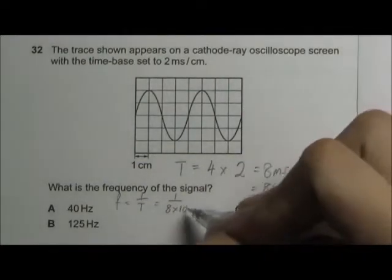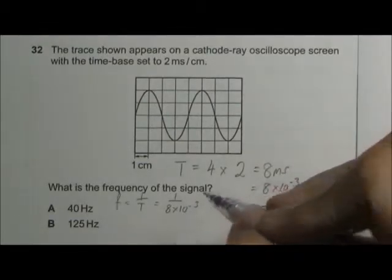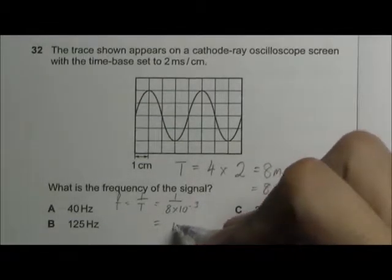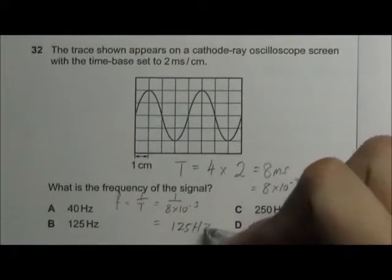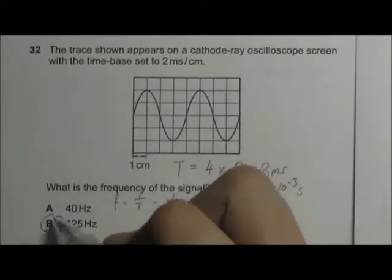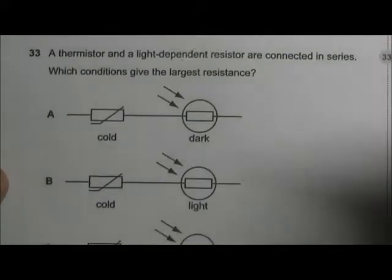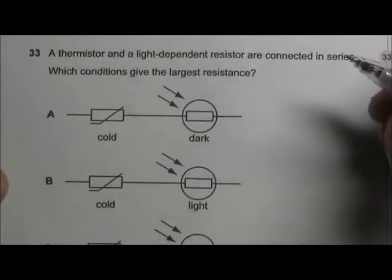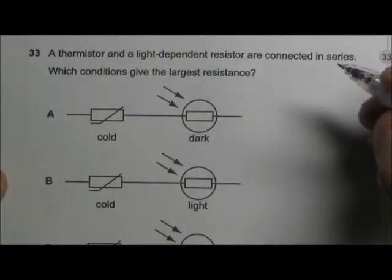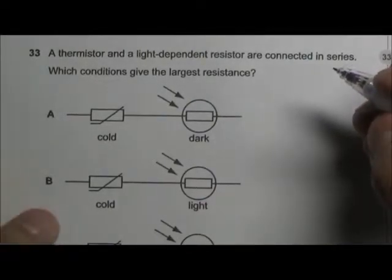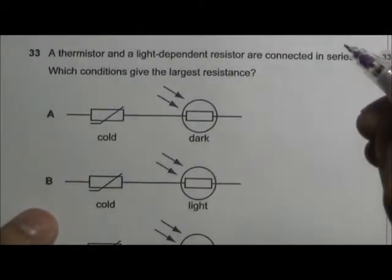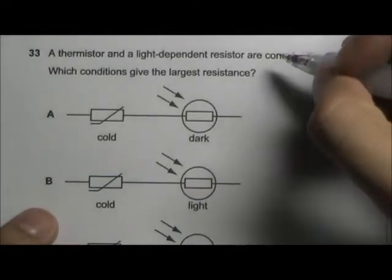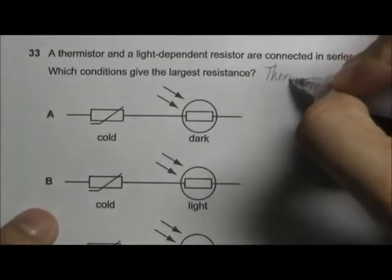We have a thermistor and a light dependent resistor connected in series. We need to understand what conditions will affect the resistance of both components. For a thermistor: